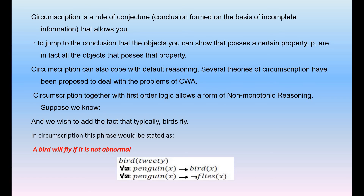For example, in circumscription, the phrase 'birds can fly' can be stated as: bird(x) and not abnormal(x) implies fly(x). For all x: penguin(x) implies bird(x), and penguin(x) implies negation fly(x). So we can conclude that if abnormal is true, it cannot fly; if abnormal is false, it can fly.